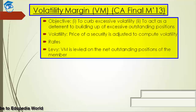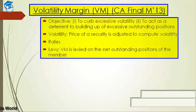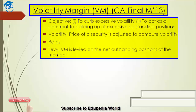Volatility is basically the price of a security which is adjusted to compute the volatility. When the securities are being traded ex-the-benefits, the price variations are adjusted on account of calls, bonuses, rights shares, mergers, amalgamations, and schemes of arrangements. On the last day of the trading cycle, the securities that attract the volatility margin and the applicable margin rates are announced for the succeeding trading cycle. Finally, a volatility margin is levied on all net outstanding positions of members in a security based on their respective margin rates.